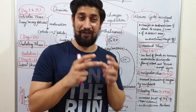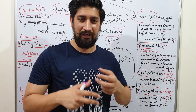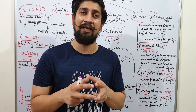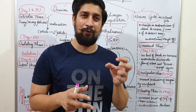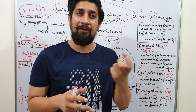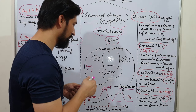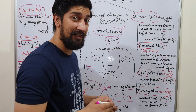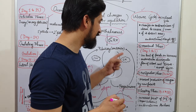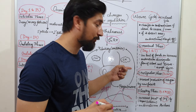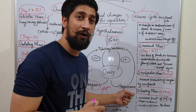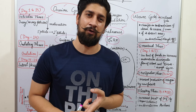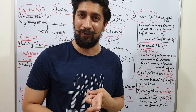Follicle stimulating hormone stimulates the follicles in the ovary, helping the development process. The follicles are pushed to secrete a hormone called estrogen. Luteinizing hormone acts on the ovary and causes the release of progesterone. Estrogen and progesterone together are called sex hormones.